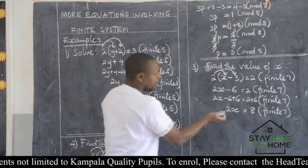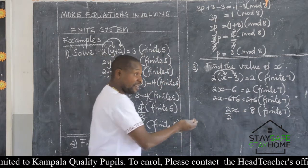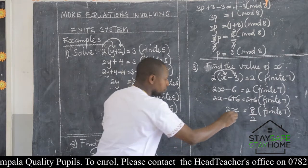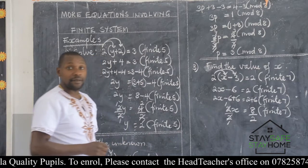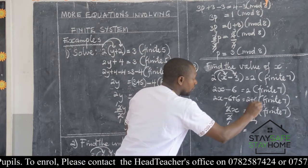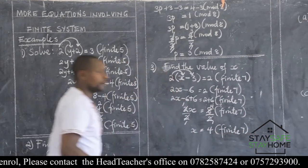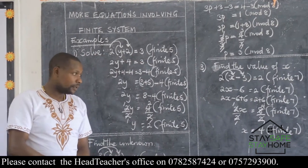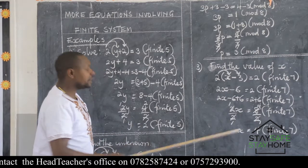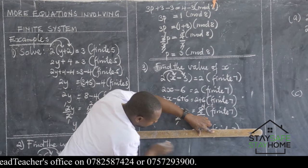If we have 2X, this will give us 2 plus 6. What do you get? Somebody is getting 8. And this is finite 7. What next? Here our coefficient is 2, our subject is X. Is 8 a multiple of our coefficient? Yes, 8 is a multiple of 2. So we divide both sides by 2. 2 divided by 2, somebody gives me 1. We remain with X. And 8 divided by 2, somebody is saying 4. And this is finite 7. Underline the answer for proper accountability.